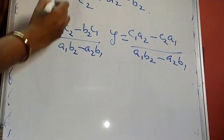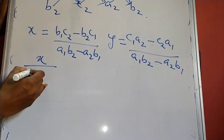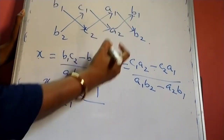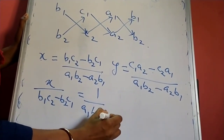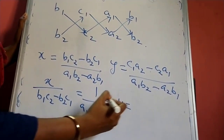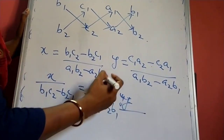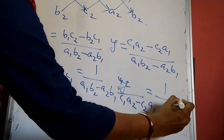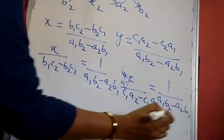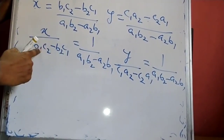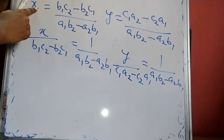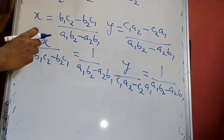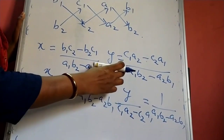This expression has been derived from the equations like X divided by B1C2 minus B2C1, is equal to 1 upon A1B2 minus A2B1. And for the Y value, we have Y upon C1A2 minus C2A1, is equal to 1 upon A1B2 minus A2B1. Therefore, when we are cross multiplying, we get the value of X and when we multiply by 1 we get the value of Y.